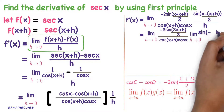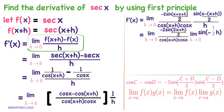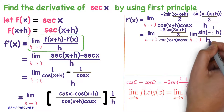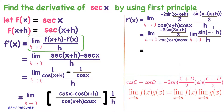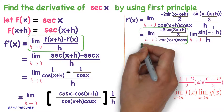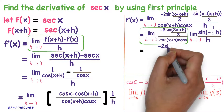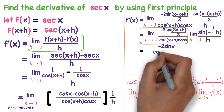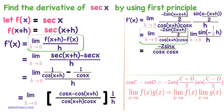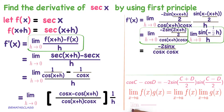Apply the limit for the second function also. Limit h tends to 0: the x minus x will get cancelled, and this will become minus 1 by 2 into h, divided by h. Now apply the limit to this function — wherever h appears, put 0. We know the formula limit h tends to 0 of sin x divided by x equals 1. Applying the same formula here, a is minus 1 by 2.